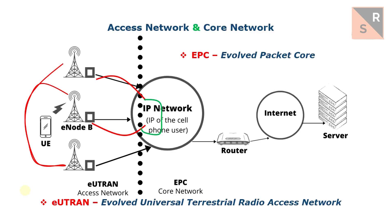In summary, in a 4G mobile network there is a set of E-Node B's spread over a large territory. Each E-Node B is equipped with antennas. The E-Node B's are connected to an IP network and make up the access network.